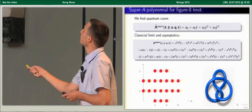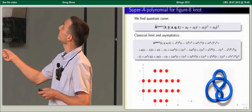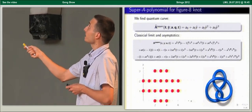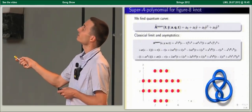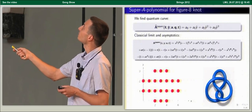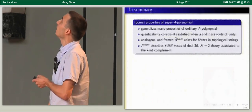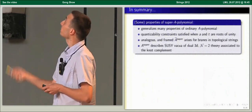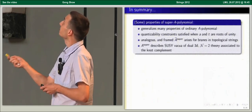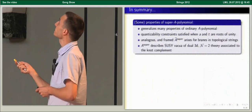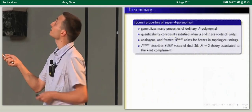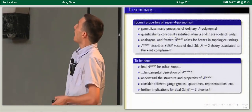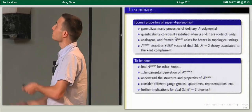The classical limit gives the super-A polynomial, and for A equal to 1 and T equal to minus 1 we reproduce the known ordinary A polynomial, showing there is much more structure behind the result. For the figure-eight knot we also find the super-A polynomial; the classical one and the quantum one of third order in y, which though complicated has very intricate structure, as shown by its Newton polygon. The super-A polynomial generalizes many properties of the ordinary A polynomial, arises in other physical situations including topological strings, and describes the supersymmetric vacua of dual three-dimensional N=2 theories associated to the knot complement.